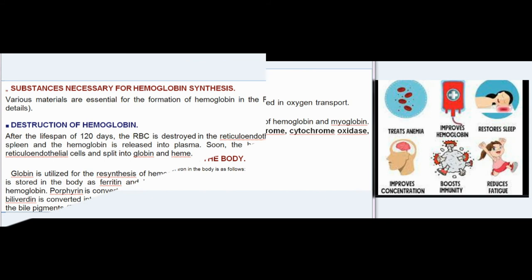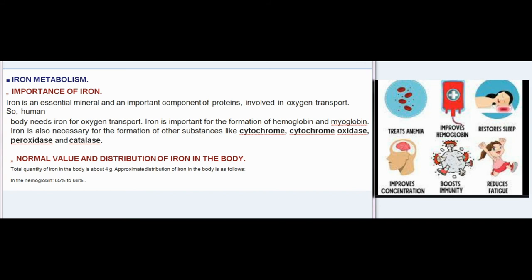Iron metabolism — importance of iron: iron is an essential mineral and important component of proteins involved in oxygen transport. The human body needs iron for oxygen transport, and it is important for formation of hemoglobin and myoglobin. Iron is also necessary for formation of other substances like cytochrome, cytochrome oxidase, peroxidase, and catalase.